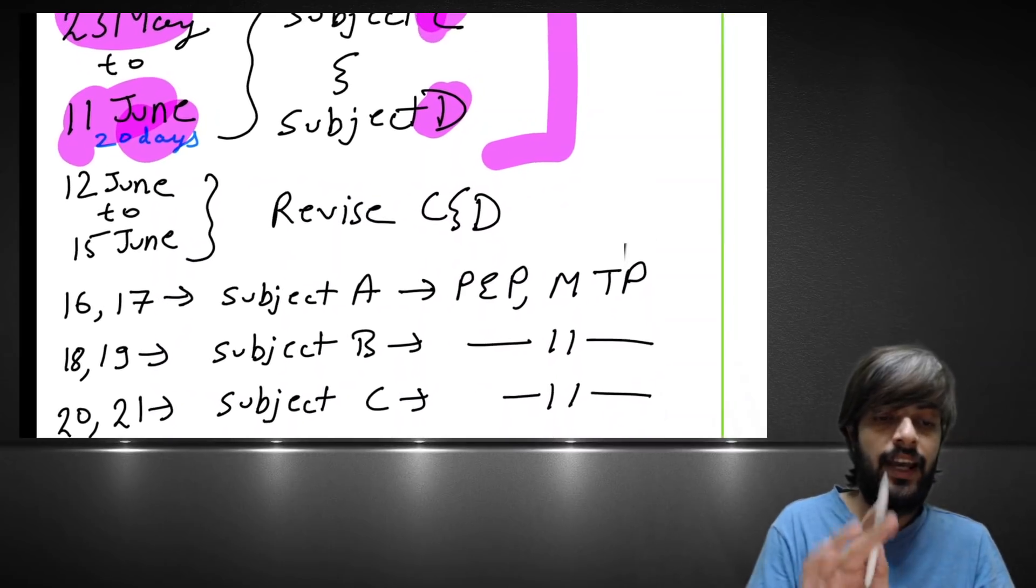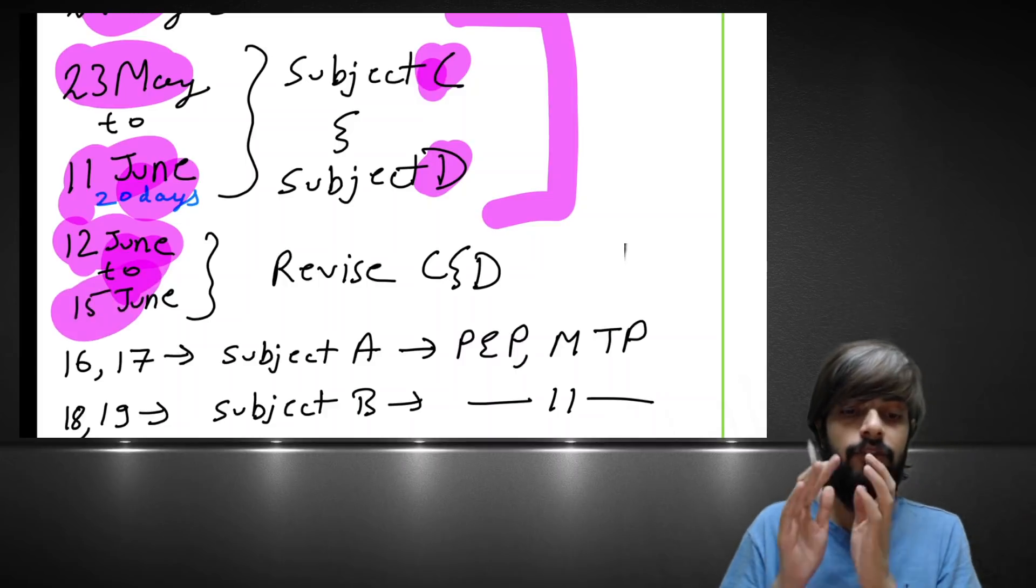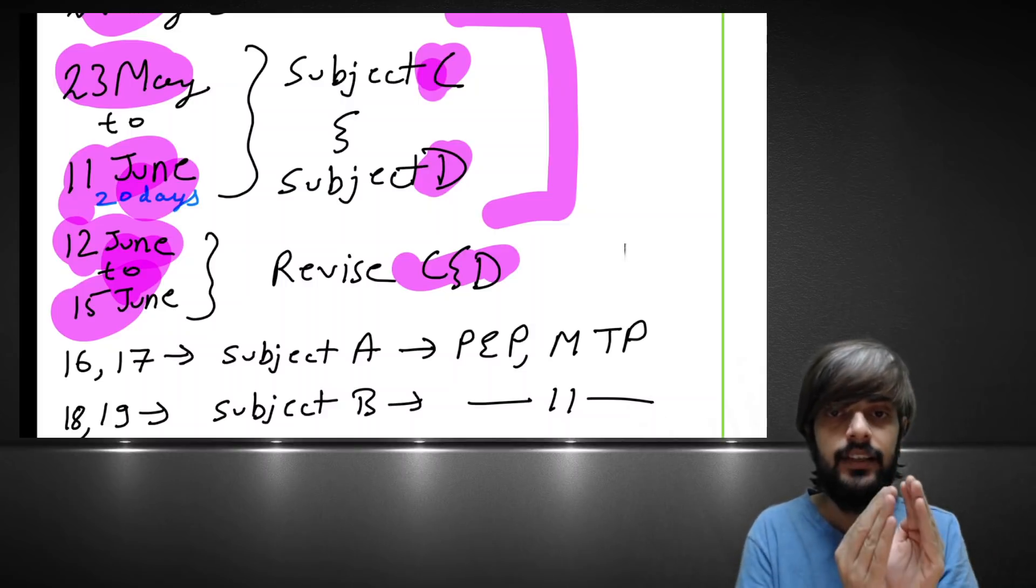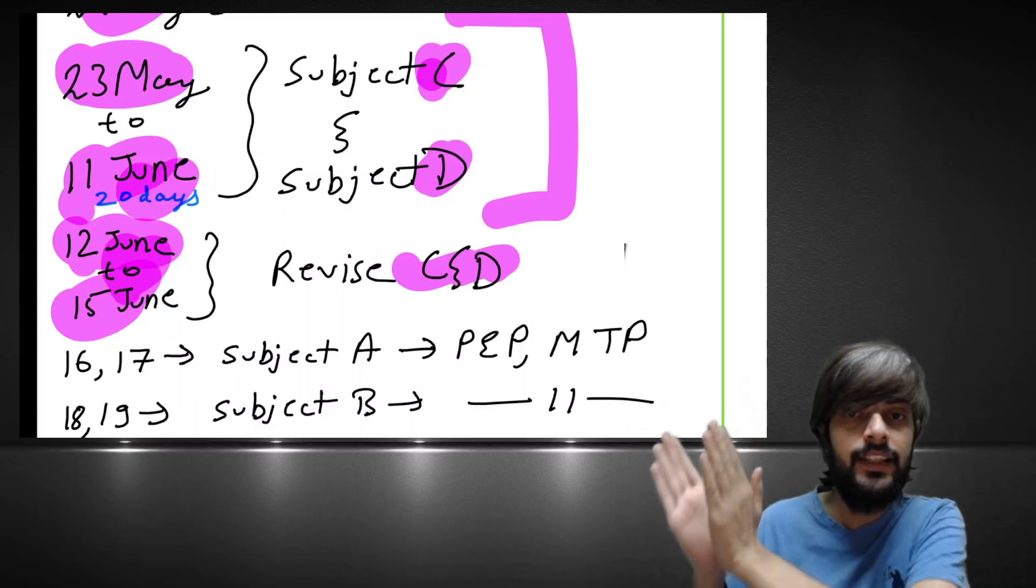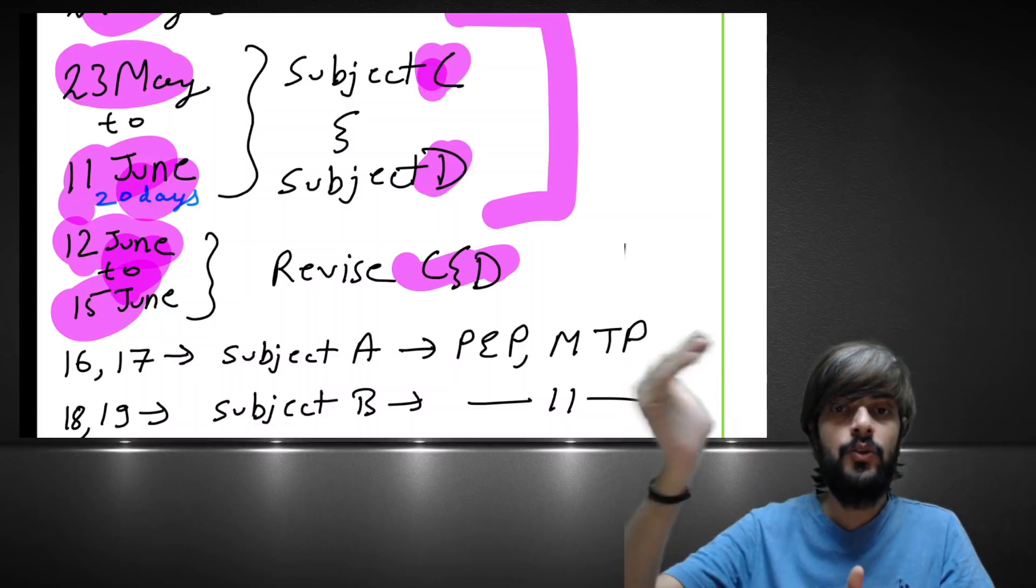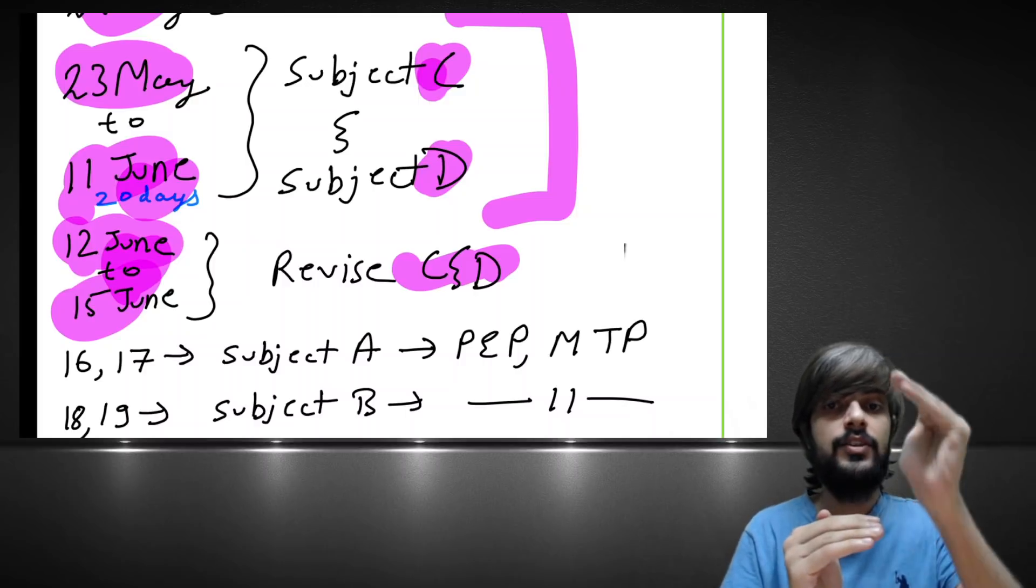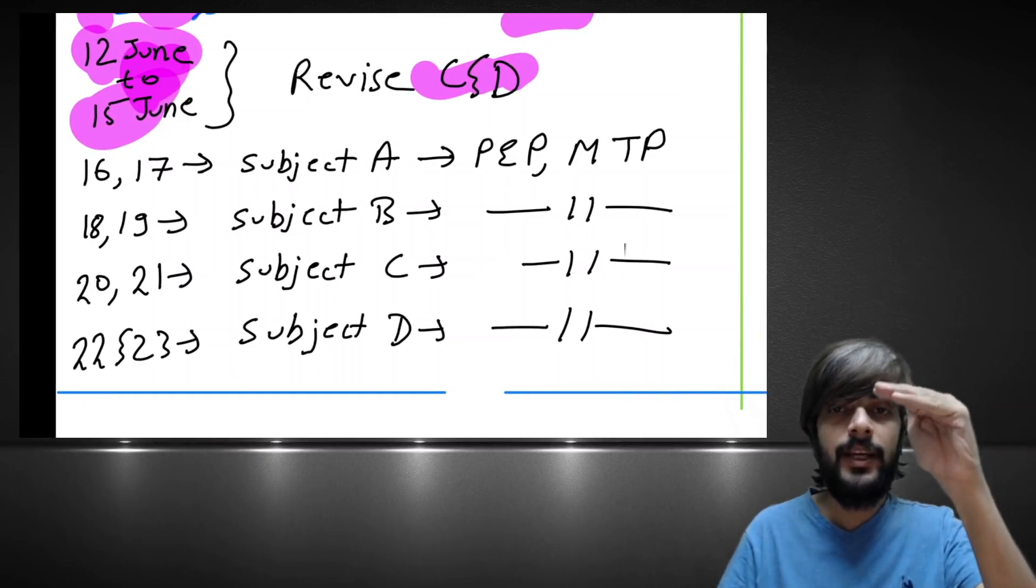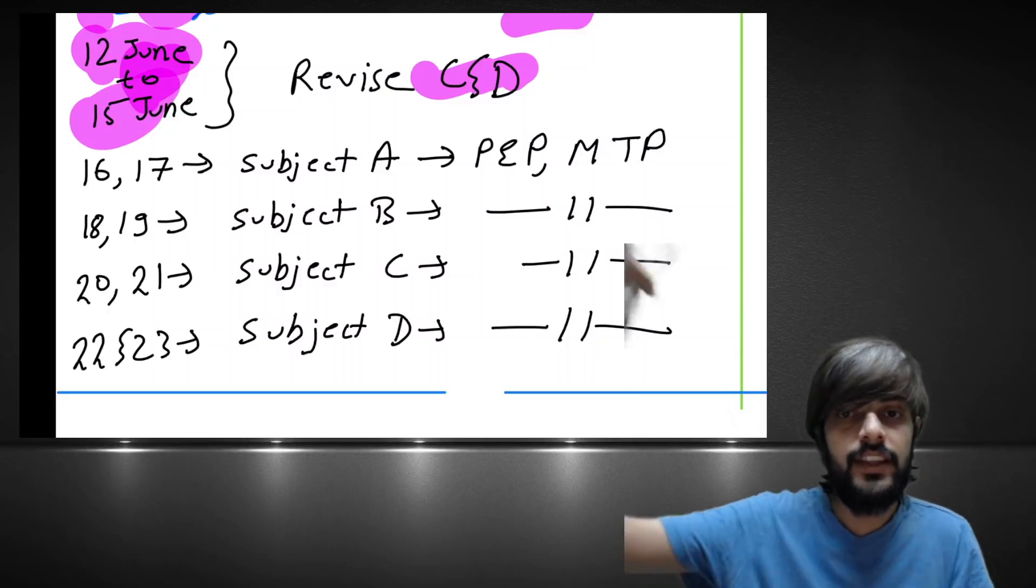Then again 4 days we have. So 12th and 13th, you revise subject C. 14th and 15th, you revise subject D. So likewise till 15th, we are giving 100 hours study. We are again revising for 2 days. So even if you are studying 10 hours in the revision phase, then whatever 100 hours you have studied, you are compiling it in 20 hours. So yes, you are studying 100 hours, you are revising 20 hours. And then again till 15th, you will be able to complete subject 1, subject 2 with revision, subject 3, subject 4 with revision, with MCQ.